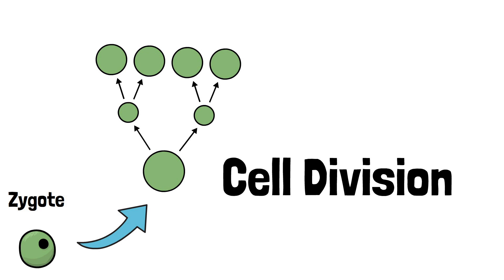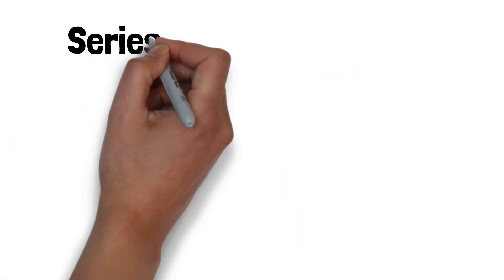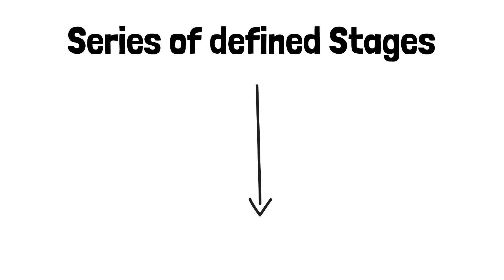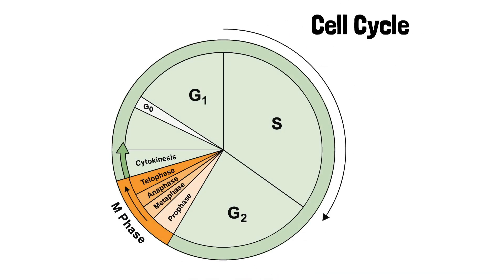It is called division because the cell divides itself equally among the two daughter cells. In order to divide, each cell passes through a series of defined stages which constitute the cell cycle.